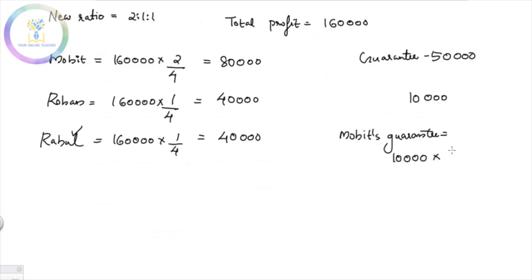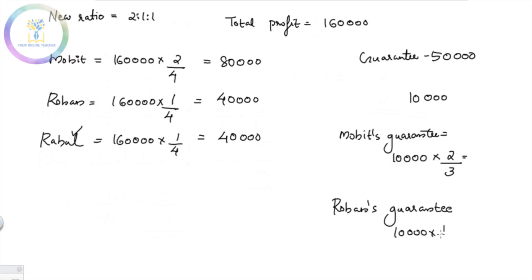The deficiency of 10,000 is shared between Mohith and Rohan in their old ratio of 2:1. Mohith bears 2/3 of 10,000 = 6,667. Rohan bears 1/3 of 10,000 = 3,333.